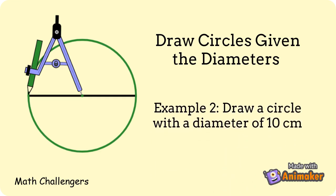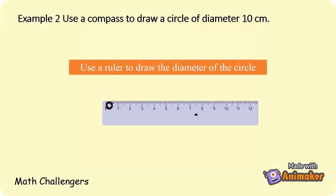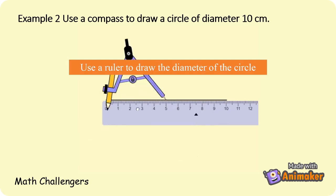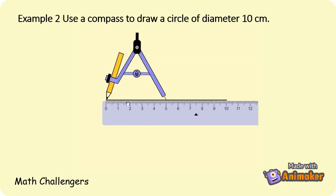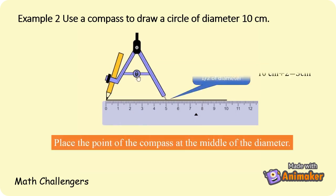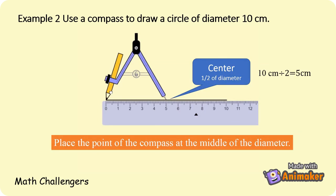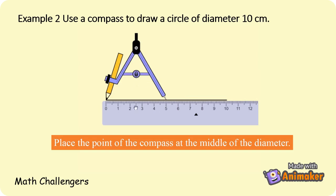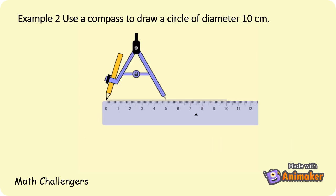Example number 2: Draw a circle with a diameter of 10 cm. Use a ruler to draw the diameter of the circle. Place the point of the compass at the middle of the diameter — that will be the center of the circle. Draw the circle by turning the compass through 360 degrees.